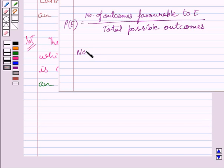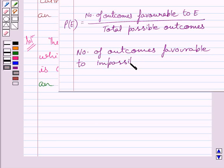So we get number of outcomes favorable to impossible event is equal to zero.